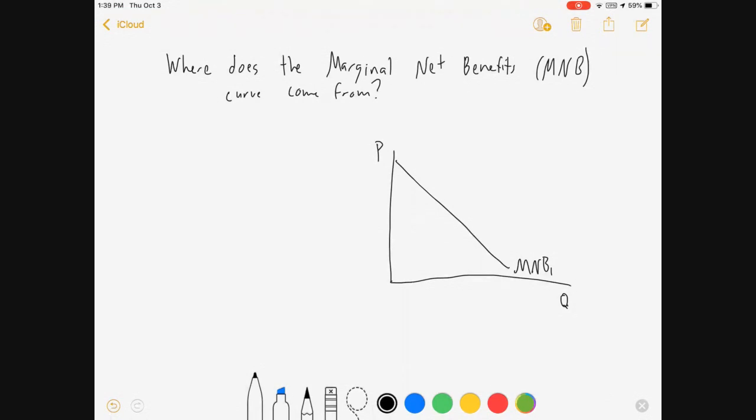It looks something like this. Marginal net benefits are downward sloping in Q. Now where does it come from? Well that's what this video is about.